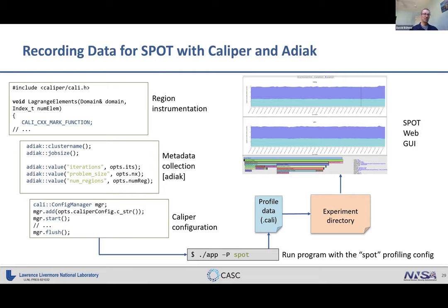Spot is about analyzing huge collections of runs, not just individual runs, so it doesn't make sense to compare data from a 1D test program with a 3D production problem — you need to distinguish those. Additionally, metadata enables performance analysis in its own right: recording MPI job sizes for scaling studies, recording program configuration to see how performance changes, or comparing how different users run the program. This is all metadata that's really helpful for enabling comparisons between different runs.